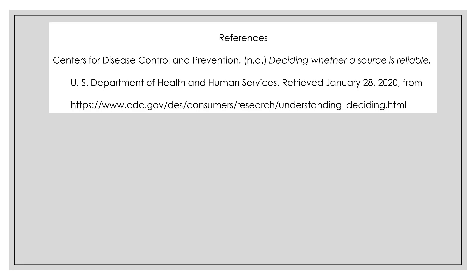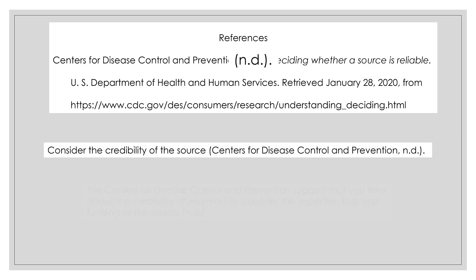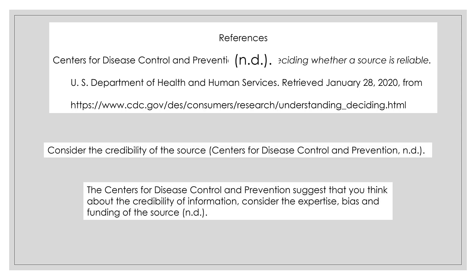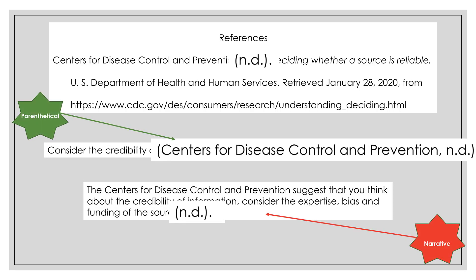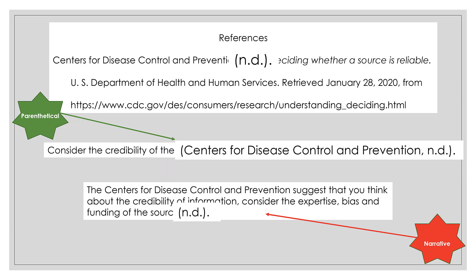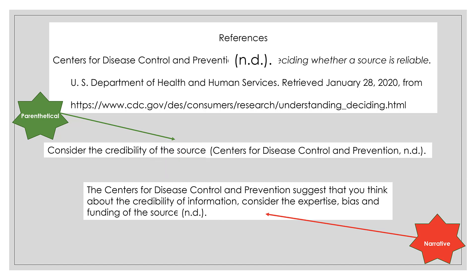And if there is no date, you still need to have something in the date field. If your reference says 'n.d.' for no date, your in-text citation should also say 'n.d.' In this particular case, we use the retrieval date in the reference to give it some timeframe, but that would not be used for the in-text citation.